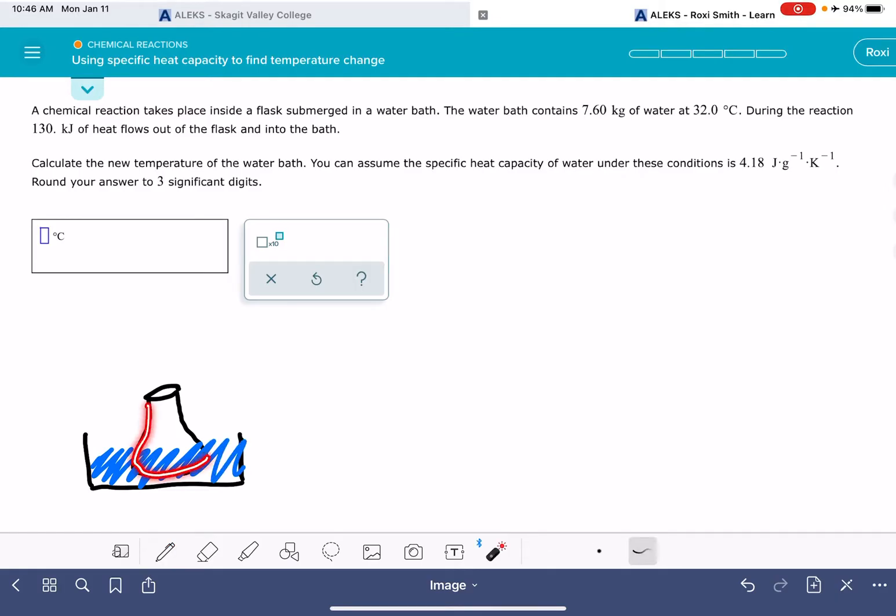There's some sort of chemical reaction that's taking place in this flask while the flask is submerged in water. If this chemical reaction is exothermic, heat will be transferred from the reaction flask into the water bath, which will cause the temperature of the water to increase.